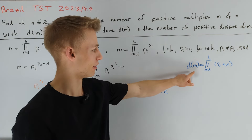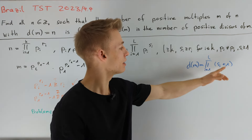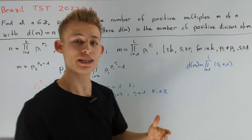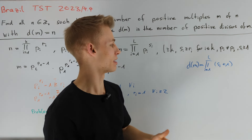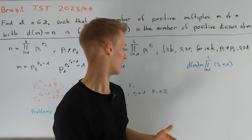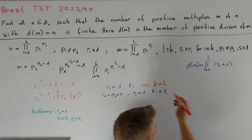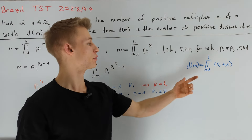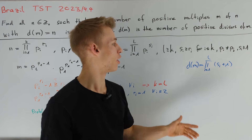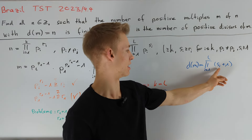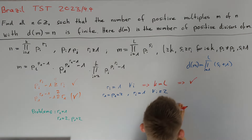Looking at d(m), it is the product of l factors each greater than or equal to 2. If l is greater than or equal to k plus 1, then d(m) would have at least k plus 1 prime factors and cannot equal n. Therefore in this case l must equal k. Looking back at the formula for d(m) with l equal to k, this product equals n only for a finite number of choices for si. Therefore in this case n is indeed a solution.